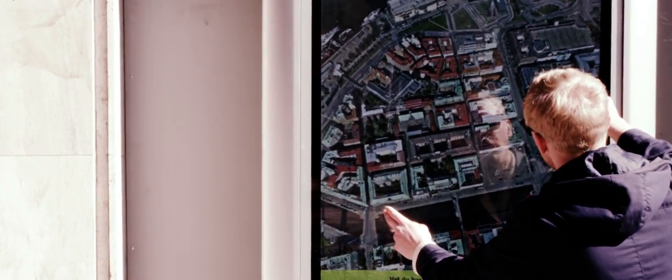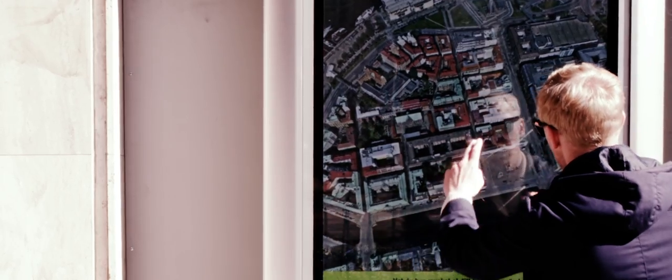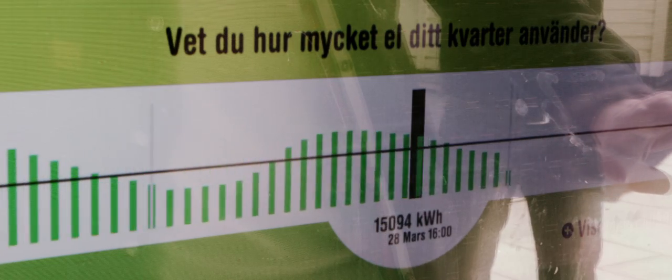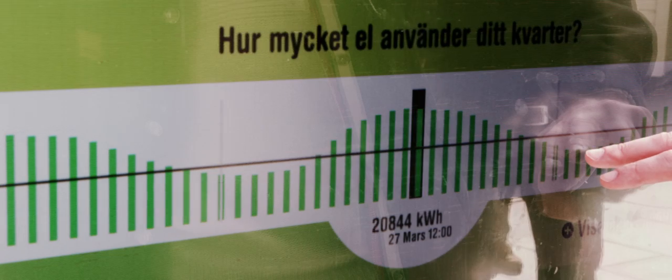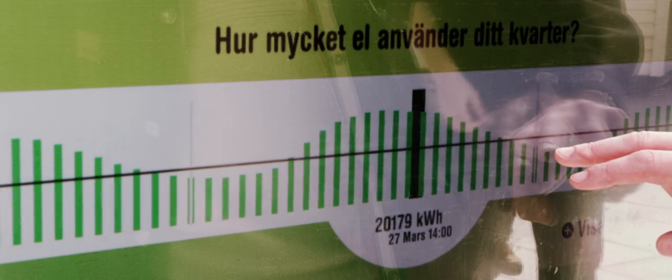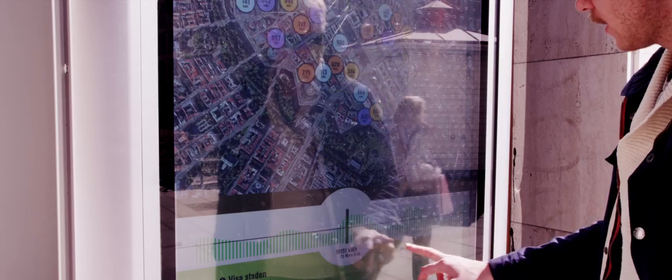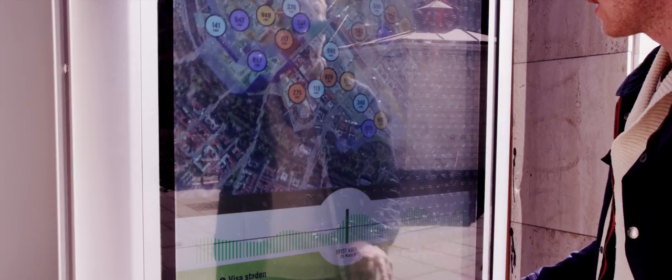On top of the map of Gothenburg, statistical information graphics shows energy use for regions. The data is constantly updated live, presenting the passing by citizen with the current state.